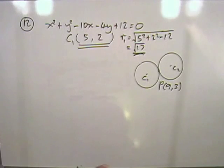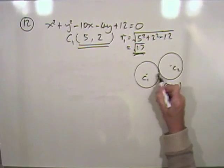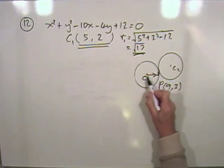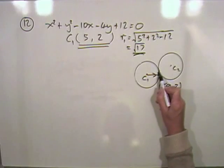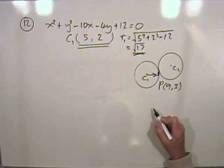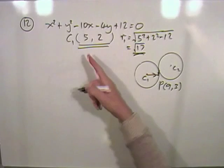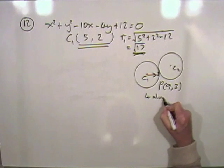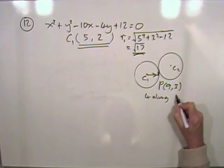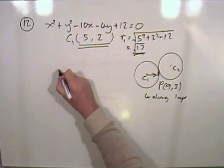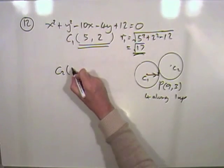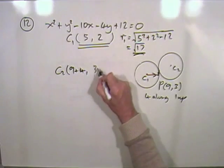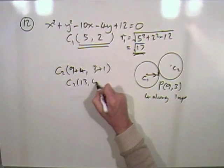A very quick way is just to take steps. Going from C1 to P, how many along, how many up? Because however many along and up it is to get there, it'll be the same again to go from P to C2. You can do that quite readily. 5, 2 to 9, 3 - that's 4 along, 1 up. So C2 is if you start at 9 and go 4 along, and if you start at 3 and go 1 up, you get C2, same answer, 13, 4.